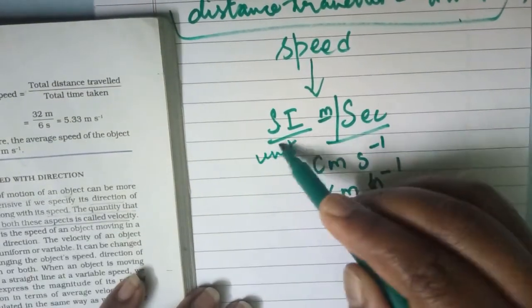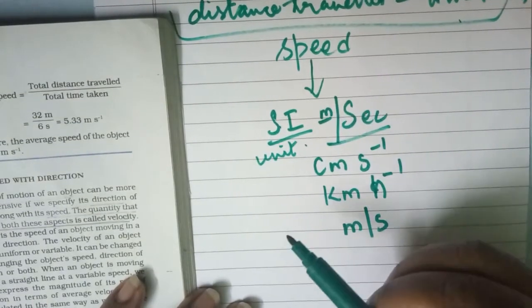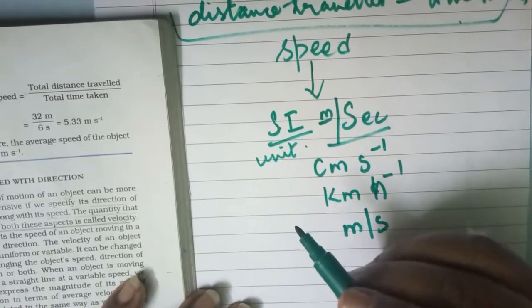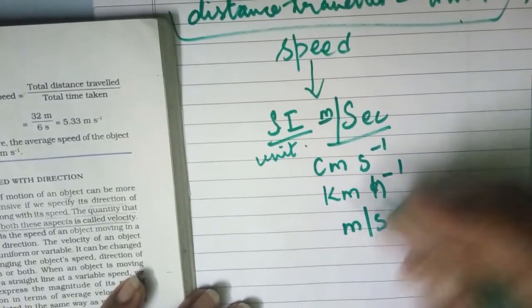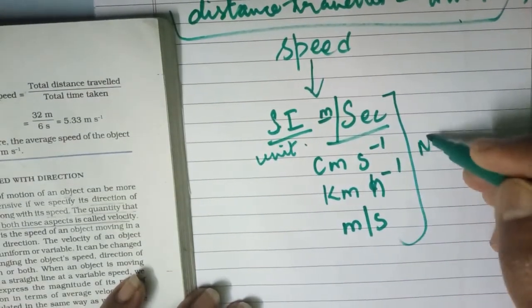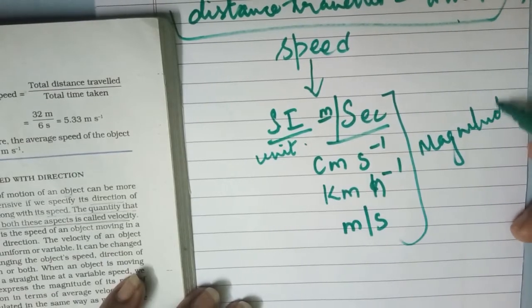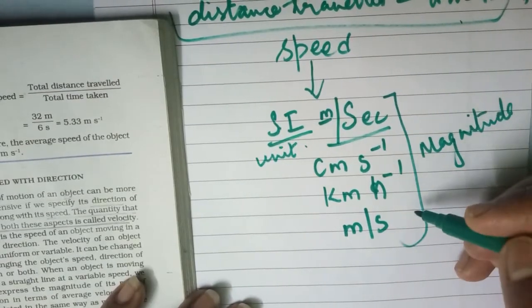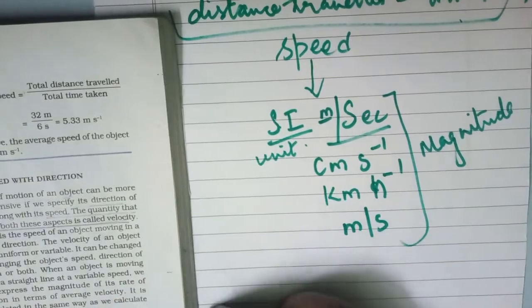To represent speed we need to have only the magnitude. Magnitude is nothing but the numerical representation of a particular quantity.